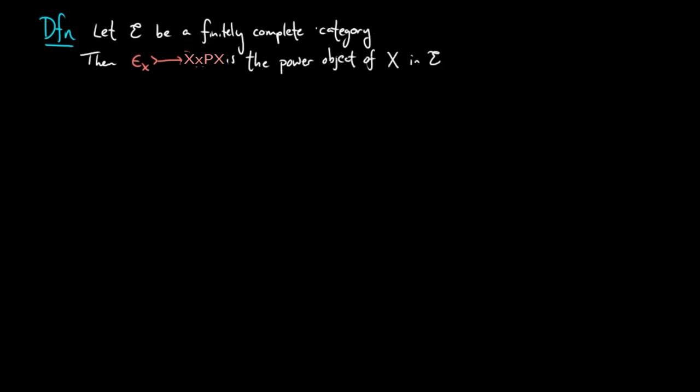We use this observation to define power objects in a finitely complete category E. Let E be a finitely complete category. We say that the inclusion of epsilon sub X in X cross PX is a power object of X in E,